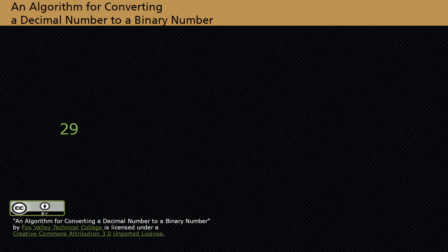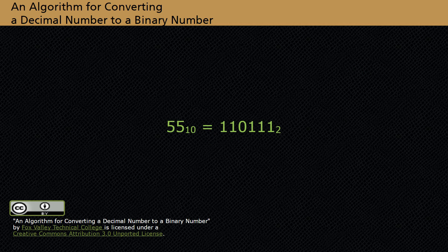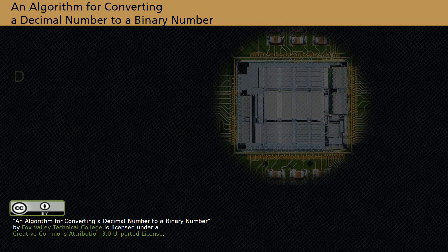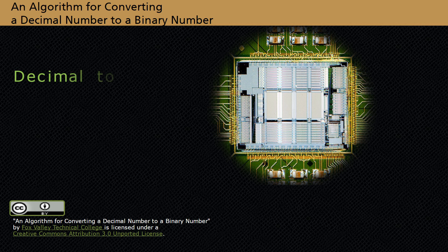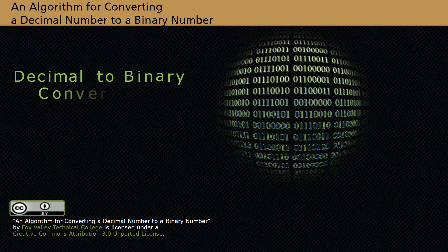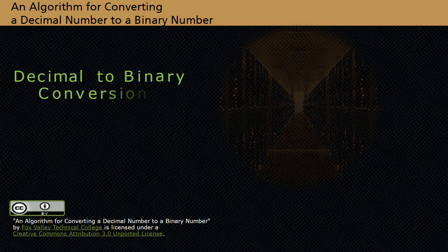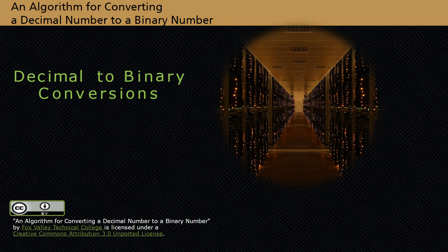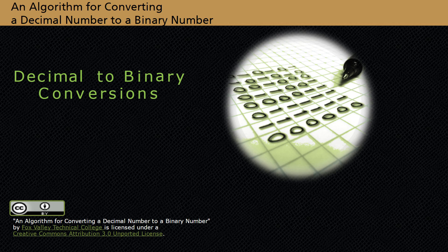Different number systems are used by digital circuitry to perform various functions. Some number systems are used to display numerical values, others are used as a shorthand method for programming, and binary numbers are processed by the internal circuitry of digital devices. To know how some digital circuits operate, it is necessary to understand the number systems used by them and how to make conversions from one to another.